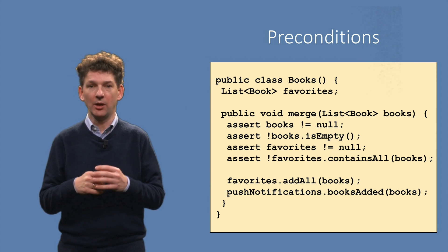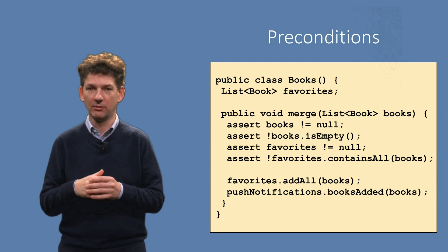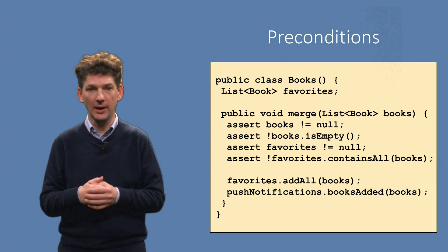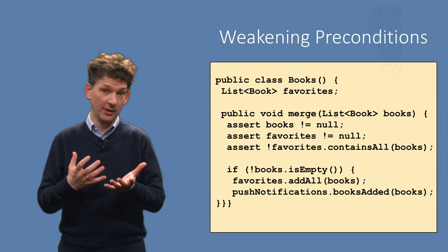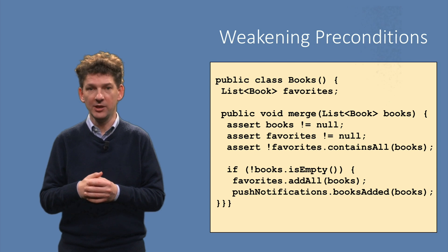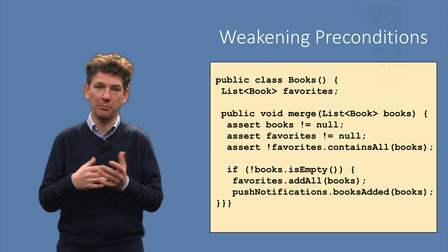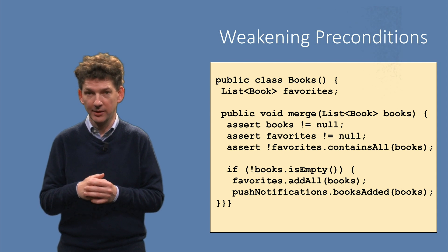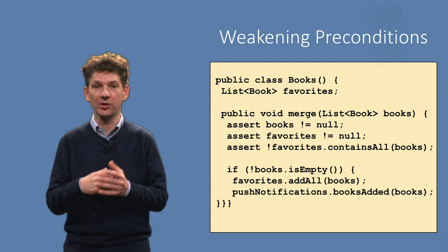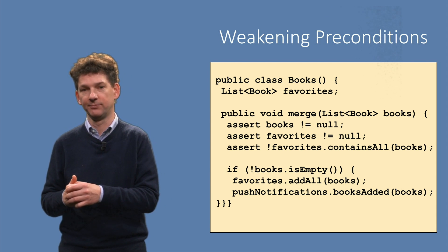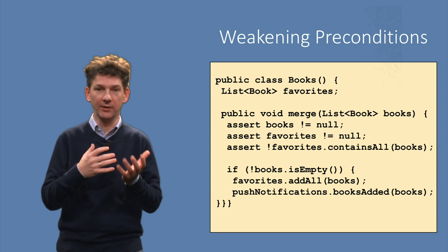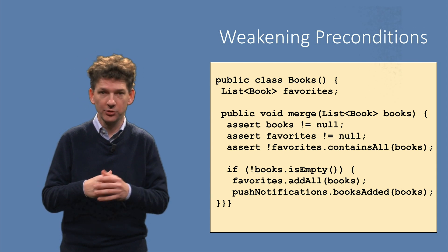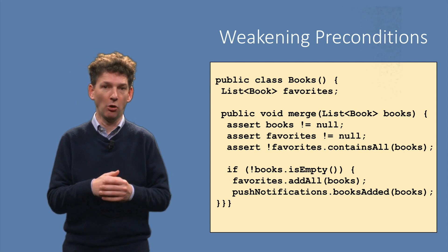The four preconditions given here are just one way of working with preconditions. We could have designed preconditions differently. For example, we can drop the requirement that the list cannot be empty. The desired behavior of the method would then be that if an empty list of books is added, nothing should be done — in particular, no push notification should be sent. This means that the method needs to be extended with an if statement to ensure push notifications are only sent if the list is non-empty. With this if statement in place, we can drop the empty assertion. We have made the method a little more general — it has fewer assumptions — but the price to pay is that the method itself has become a little more complex.